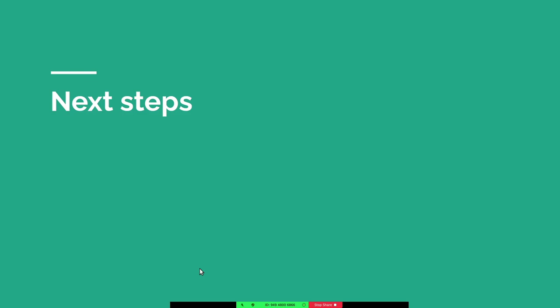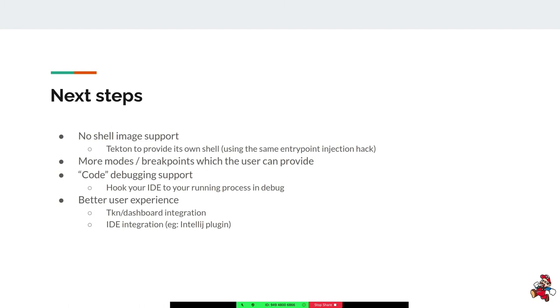This is more or less the current status of our proposal and work. Let's see what the next steps are. There are a few things we need to enhance or add for a more complete debug feature. One shortcoming is if you're using an image inside your steps that doesn't have a shell, the debug scripts won't work — you won't be able to continue or break the flow. One thing we'd like to provide is for Tekton to be able to provide its own shell, probably as part of the entry point itself — either the same binary or using the entry point injection to inject another binary — so no matter what image is used inside your step, you could debug it.